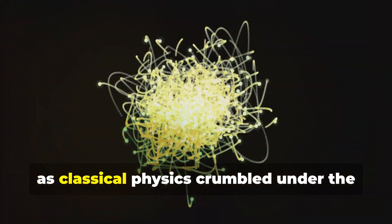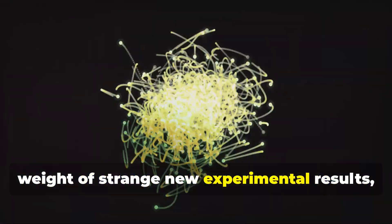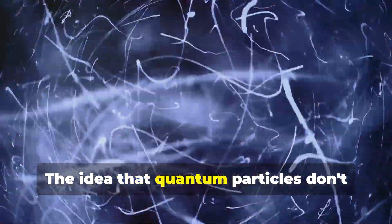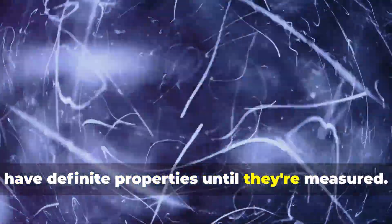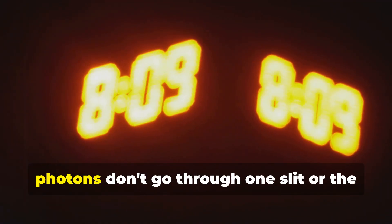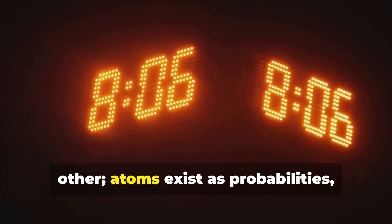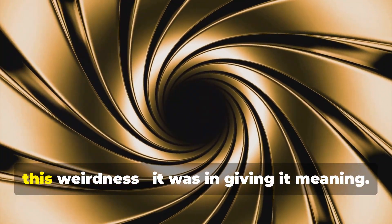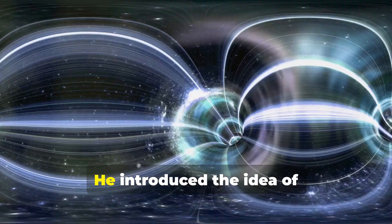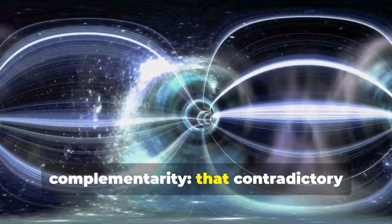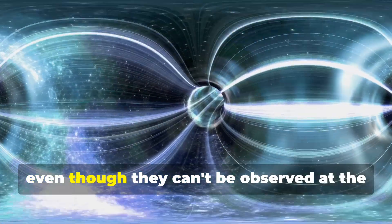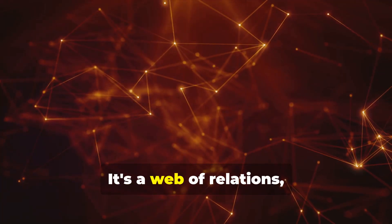In the early 20th century, as classical physics crumbled under the weight of strange new experimental results, Bohr helped forge the Copenhagen interpretation. The idea that quantum particles don't have definite properties until they're measured. Electrons don't have precise locations. Photons don't go through one slit or the other. Atoms exist as probabilities, not things. Bohr's genius wasn't just in accepting this weirdness, it was in giving it meaning. He introduced the idea of complementarity - that contradictory aspects of reality, like wave and particle, are both necessary to describe the whole, even though they can't be observed at the same time.